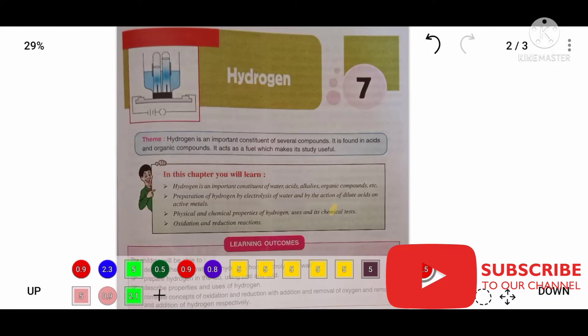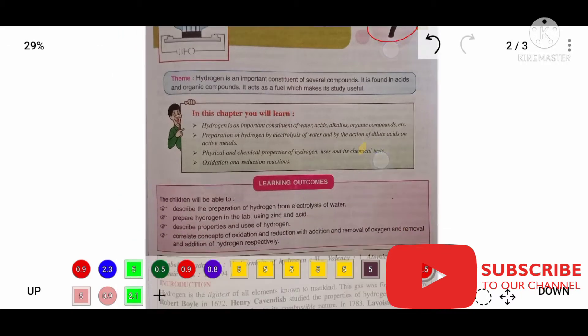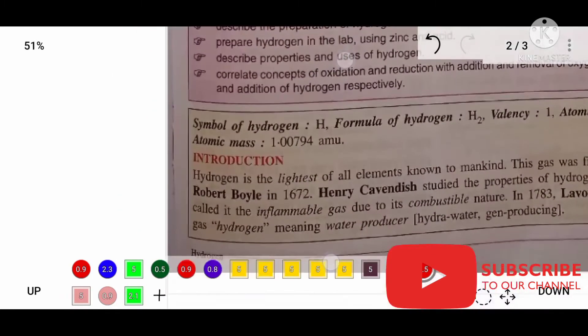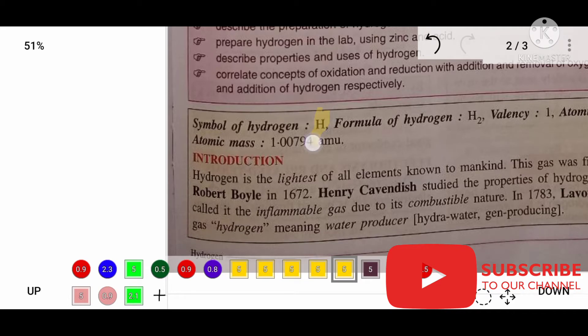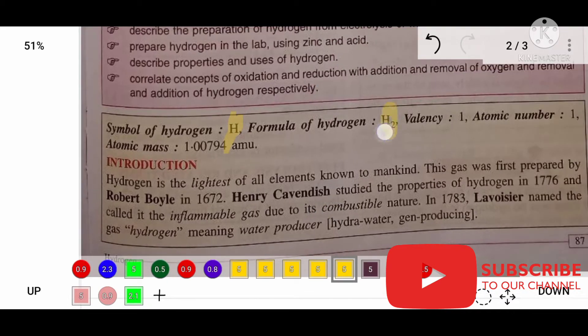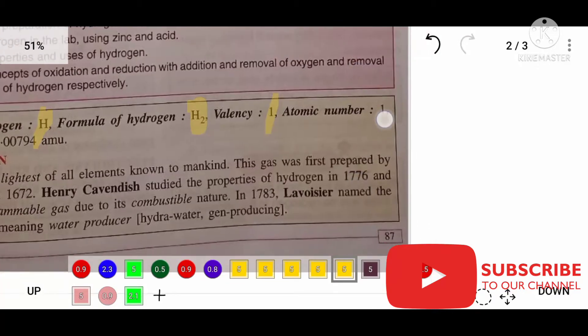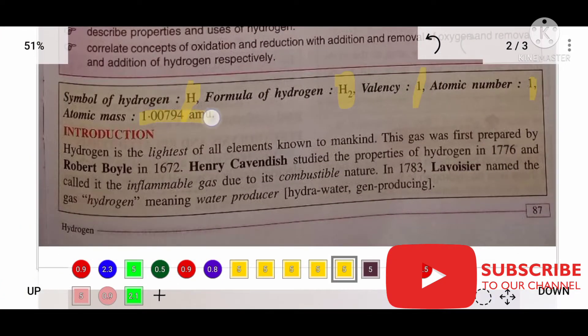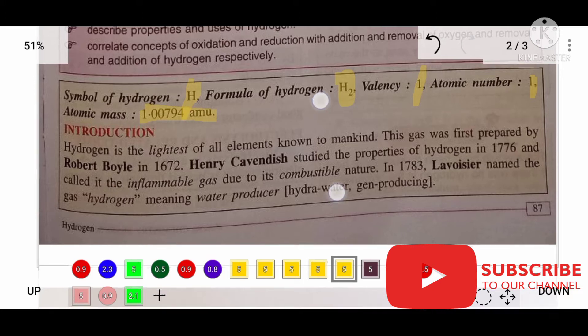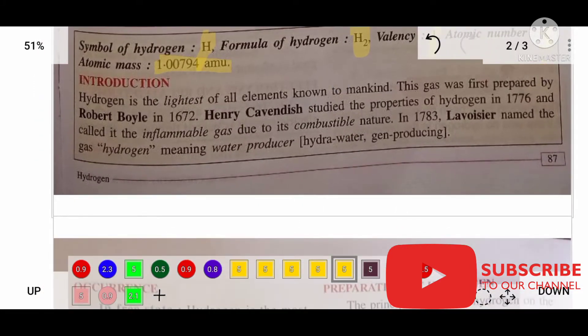Hi everyone, today I want to study Chapter 7 of Class 8, that is Hydrogen. This is a very important chapter. Let me learn the basics first. The symbol of hydrogen is H, the formula is H2. The valence of hydrogen is 1, atomic number is 1, and atomic mass is 1.0079 AMU (atomic mass unit).